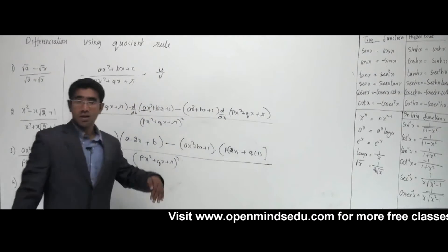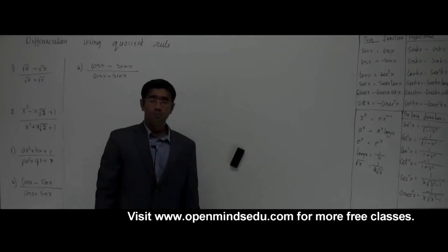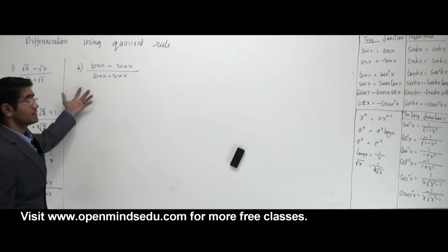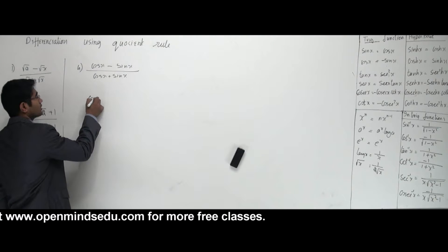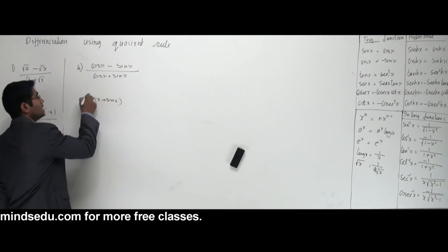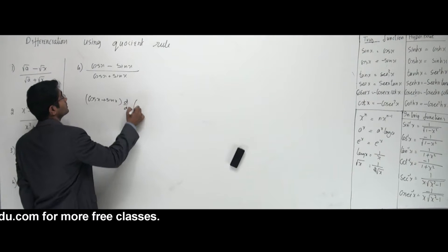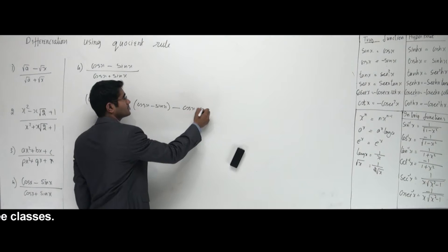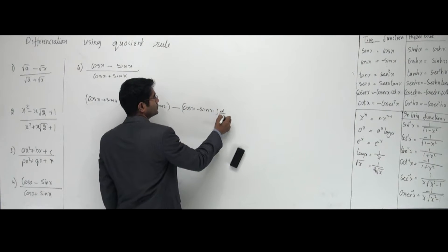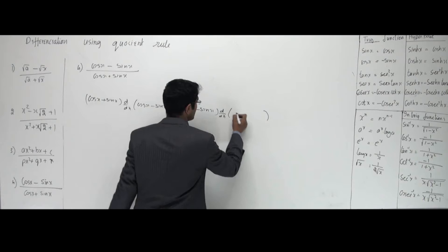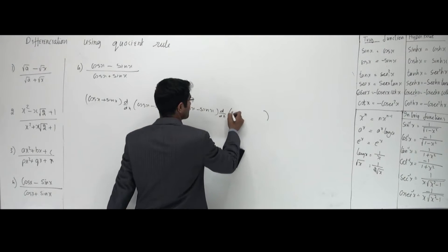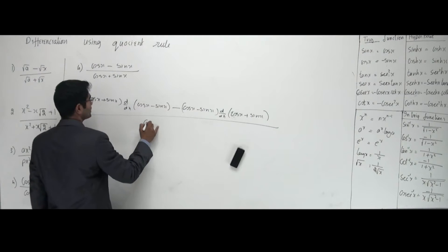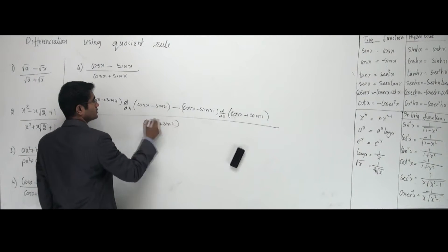Now let's work with the last problem here on the board. It says differentiate cos X minus sin X divided by cos X plus sin X. Using the same basic quotient rule: cos X plus sin X — the denominator — into differentiation of the numerator cos X minus sin X, minus cos X minus sin X into differentiation of the denominator cos X plus sin X. The whole thing divided by the denominator squared, that is cos X plus sin X the whole squared.